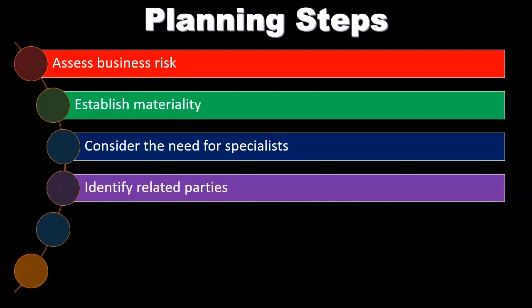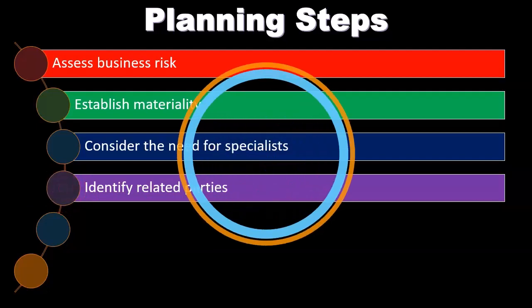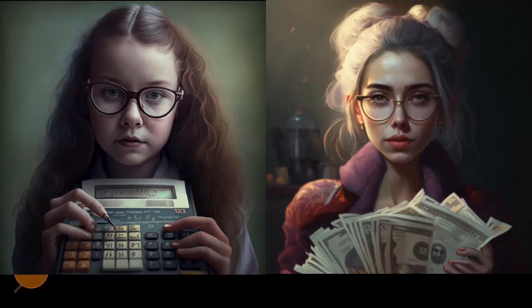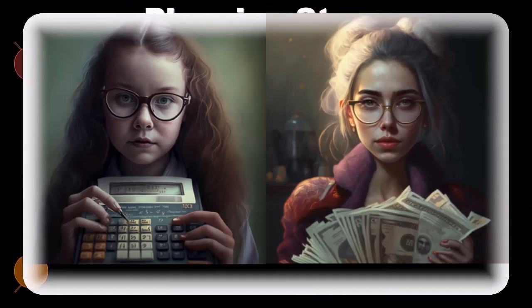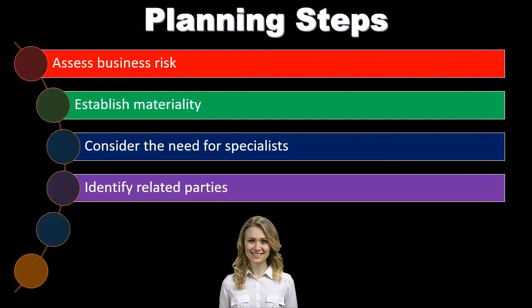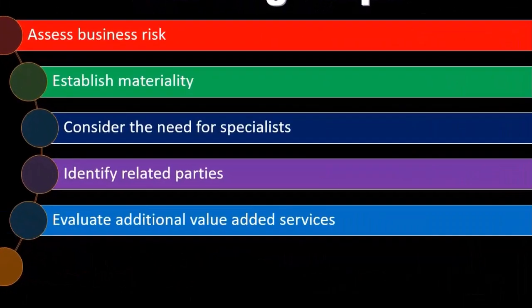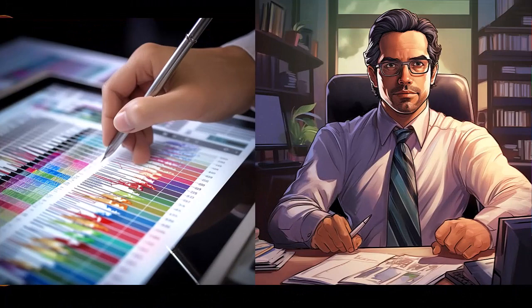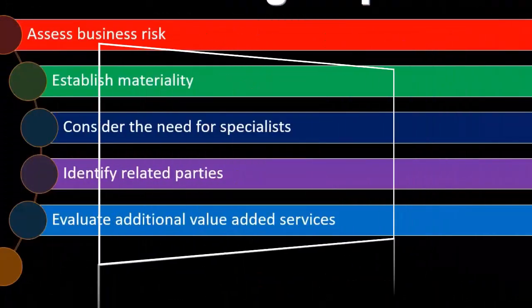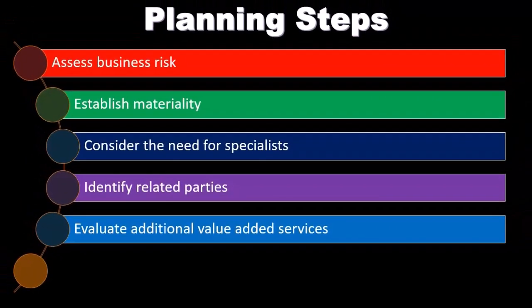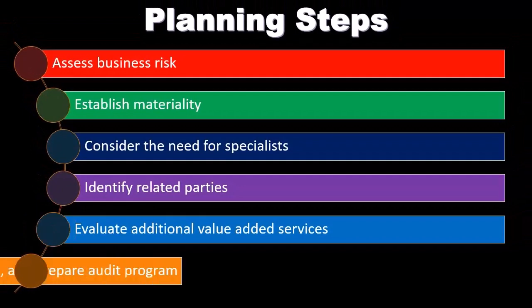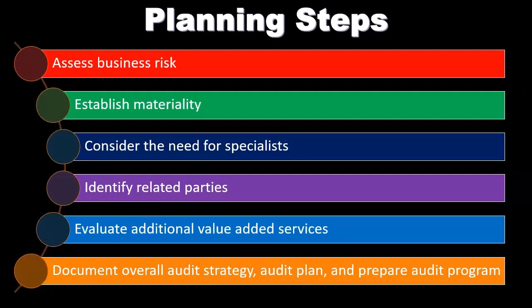We also need to identify any related parties. If there are related parties, there will be transactions between them, and we can't rely on market forces to guide what we expect from those transactions. We need to know who the related parties are, what types of transactions occur with them, and how those transactions are recorded in accordance with generally accepted accounting principles. Finally, evaluate additional value-added services and document the overall audit strategy, audit plan, and prepare the audit program.